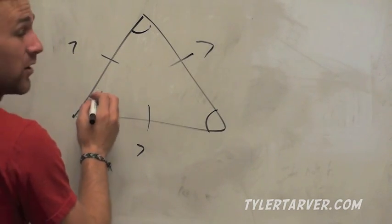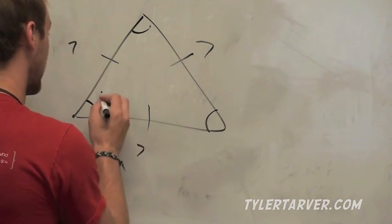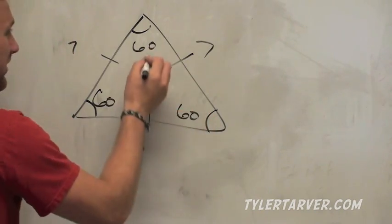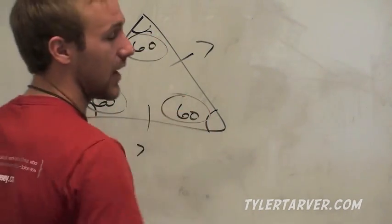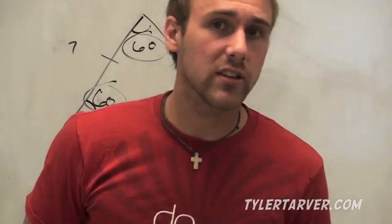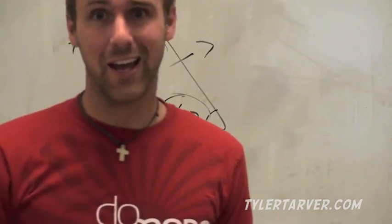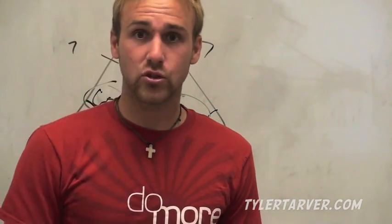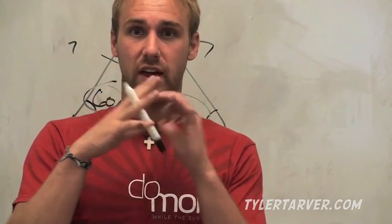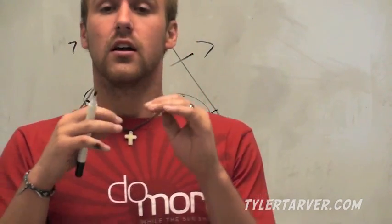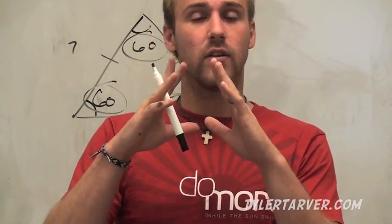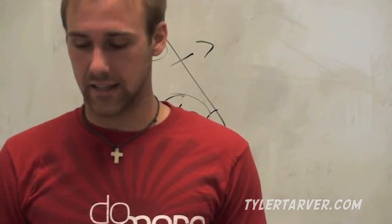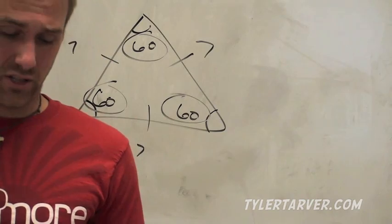The only measure that equals itself three times and adds up to 180 is 60. So every equilateral triangle has angles of 60°. Equilateral triangle: sides are equal, so angles are 60°. Equiangular triangle: angles are equal, so all sides are equal — then you just figure out the side lengths. That's it for this section.